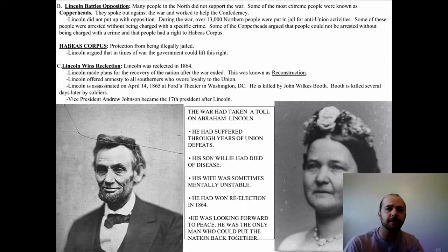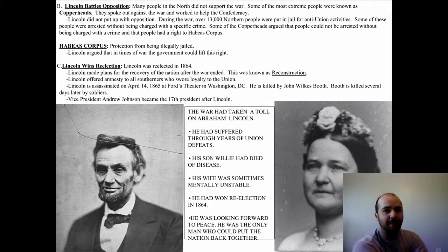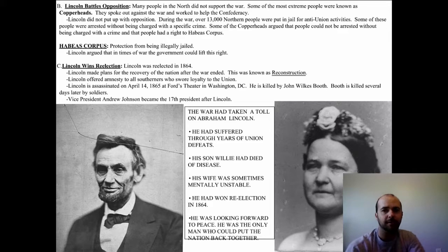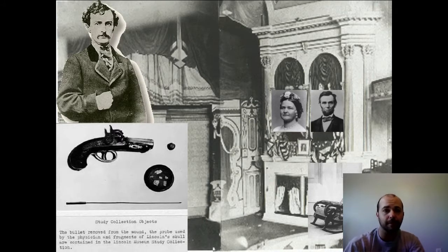Lincoln was re-elected in 1864, and he wanted to help heal the nation. He called his plan for the recovery of the nation Reconstruction, and his plan was to offer amnesty to all Southerners who swore loyalty to the Union — he wanted to be kind to the South, bring the nation back together, and have peace. But sadly, on April 14th, he was assassinated in Ford's Theater in Washington, D.C. The man who killed him, John Wilkes Booth, was later captured and killed by soldiers. With the death of Lincoln, the peaceful resolution of the Civil War was not going to happen, and Reconstruction turned out to be a real failure — a disaster for the South, the North, and the nation as a whole.